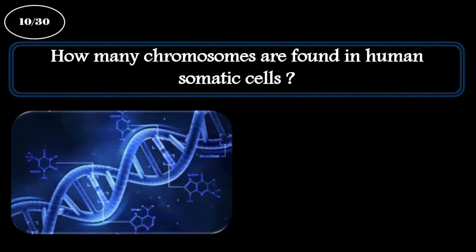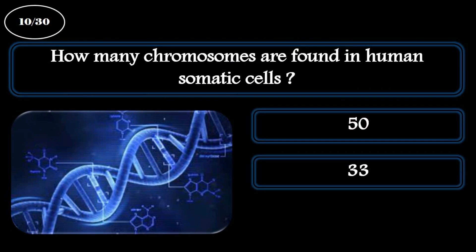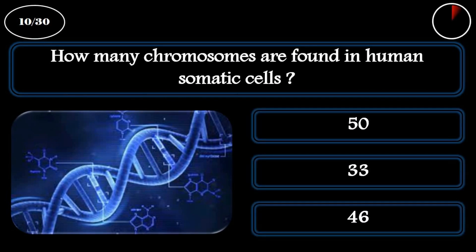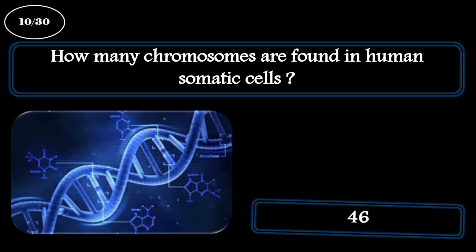Question 10. How many chromosomes are found in human somatic cells? A: 50. B: 33. C: 46. The correct answer is 46.